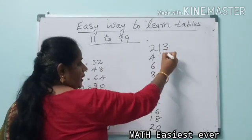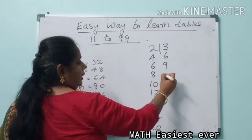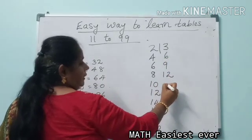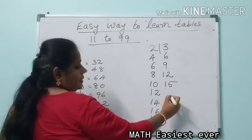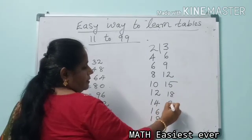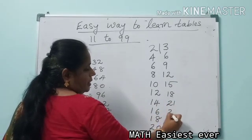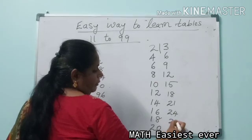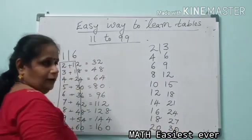Now write the 3 table: 3 ones is 3, 3 twos are 6, 3 threes are 9, 3 fours are 12, 3 fives are 15, 3 sixes are 18, 3 sevens are 21, 3 eights are 24, 3 nines are 27, 3 tens are 30.